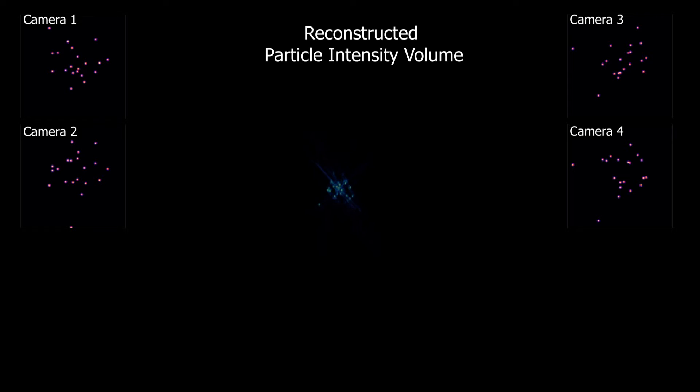The biggest issue we face when doing Tomo PIV is this massive trade-off between volume thickness and particle signal. Let's go through this in parts. We define the volume thickness as the dimension of the smallest side of the volume interrogated which usually takes the shape of a box.